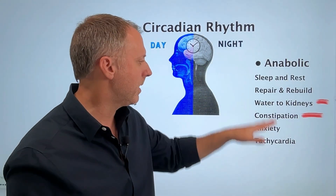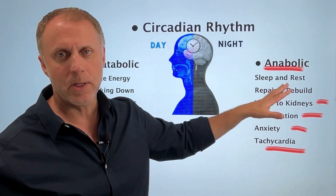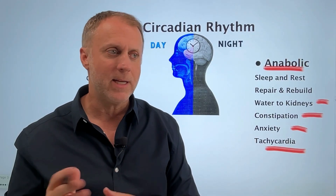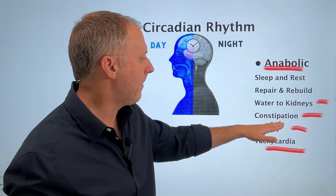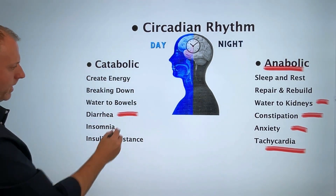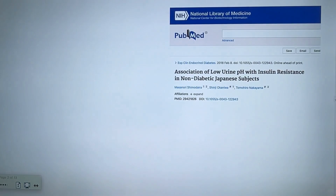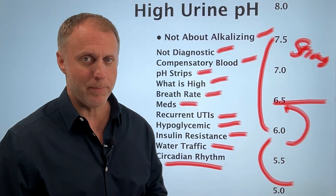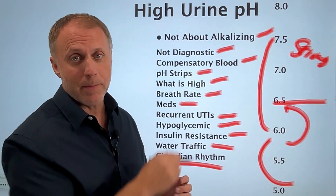We also see a lot of anxiety in an overly anabolic state, as well as issues like tachycardia. There are a lot of insights you can gain just by looking at urine pH and other measurements to get an idea of how the body is operating and what you may need to balance out to create improvement. When urine pH is too low, we see chronic diarrhea because too much water goes to the bowels, as well as insomnia and insulin resistance. If you want to understand an anabolic imbalance more, you can check out our video on understanding an anabolic imbalance.